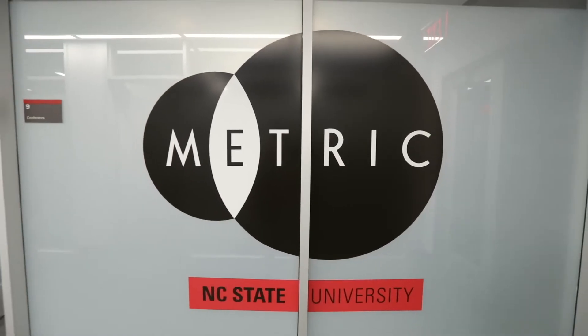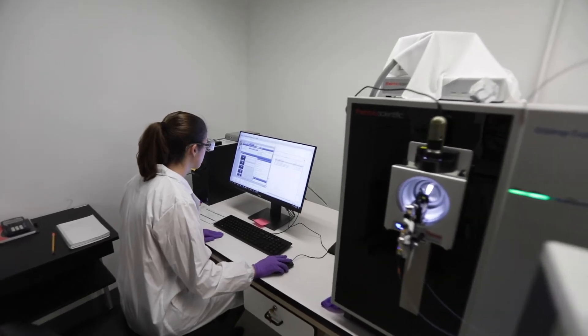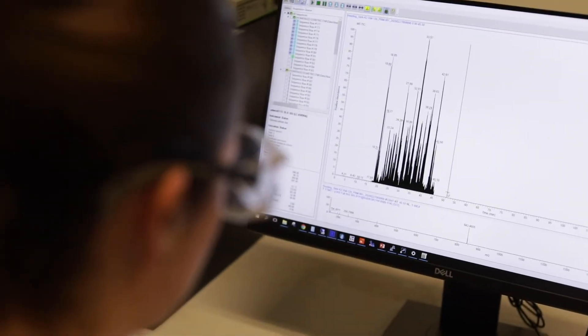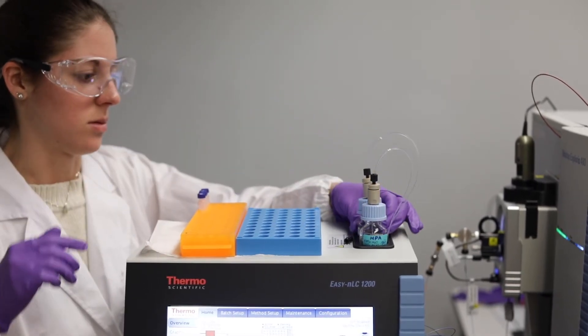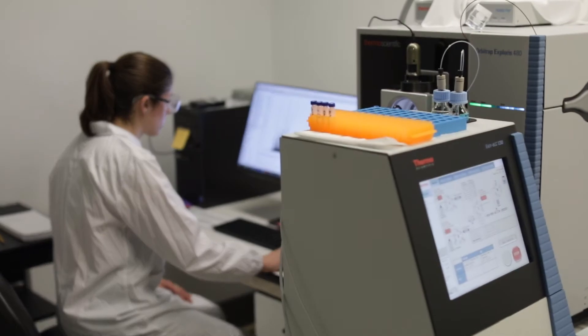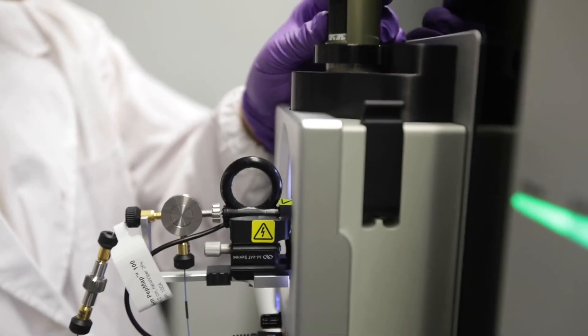One of our latest developments is METRIC which stands for the Molecular Education Technology and Research Innovation Center. It's a groundbreaking collaborative initiative at NC State University. METRIC was developed in partnership with the Department of Biochemistry and has transformed the technology landscape across campus. This high-end instrumentation supports innovative research in the chemistry department ranging from synthetic chemistry and chemical biology to quantifying environmental exposure and investigations into disease mechanisms.